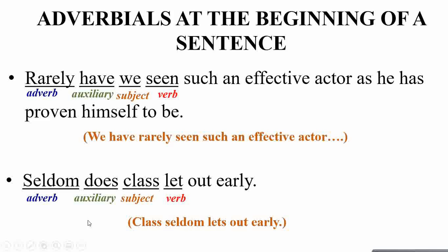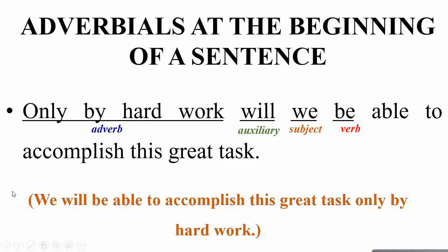'Seldom' is the adverb, followed by auxiliary 'does.' 'Class' is the subject, 'let' is your verb. Compare: 'Class seldom lets out early.' Another example: 'Only by hard work will we be able to accomplish this great task.' Here the adverbial 'only by hard work' is at the beginning, followed by auxiliary 'will,' then subject 'we,' and the verb. Compare: 'We will be able to accomplish this great task only by hard work.' For more emphasis, you bring out the adverbial to the beginning.